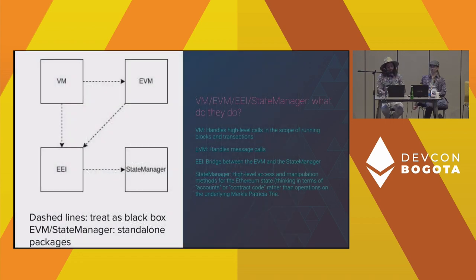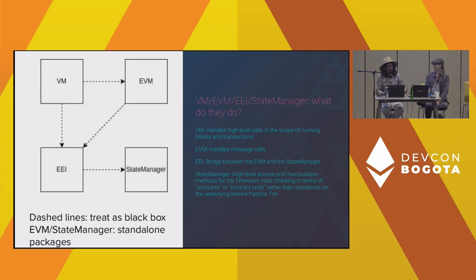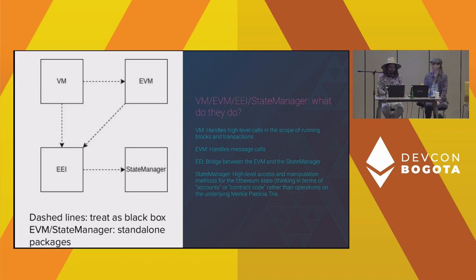We have a VM, an EVM, an EEI, and a state manager. The VM is a higher-level virtual machine — you provide it a block or transaction, and it forwards individual message calls down to the EVM, which handles the opcodes. The EVM then communicates with the state manager, which updates the state in the Merkle Patricia tree. It's much easier to interact with the state manager — you can just update an account balance rather than manually finding the key in the tree, updating it, and recomputing the root.